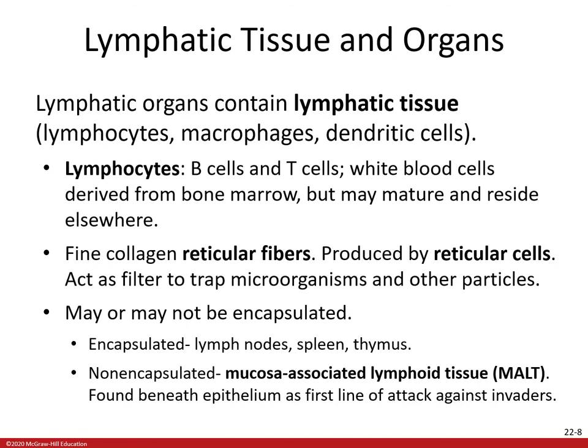These various tissues may or may not be encapsulated. Encapsulated ones are lymph nodes, the spleen, and the thymus. Non-encapsulated ones include the mucosa-associated lymphoid tissue, or MALT, found beneath the epithelium as a first line of attack against invaders in the digestive, respiratory, urinary, and reproductive systems. Examples of MALT are diffuse lymphatic tissue, lymphatic nodules, and tonsils.